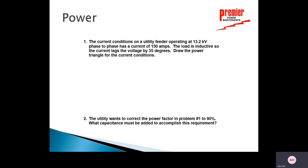To finish up, let's talk about the power factor triangle, or power triangle. We'll look at an issue from a utility or customer perspective to understand how to improve power factor. We know that we typically have inductive loads as a customer, and to correct power factor we need capacitors. The scenario: a utility feeder operating at 13 kV phase-to-phase with a current of 150 amps on the phase. The load is inductive, so the current lags by 35 degrees.